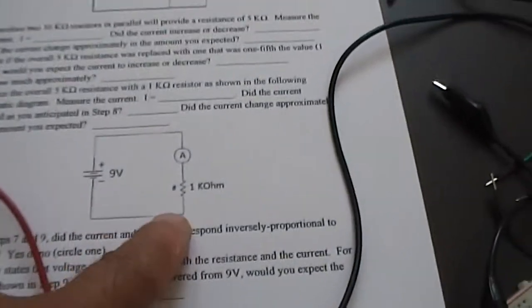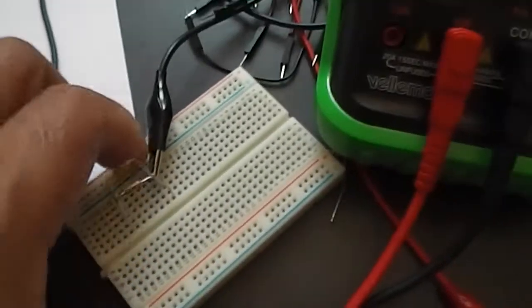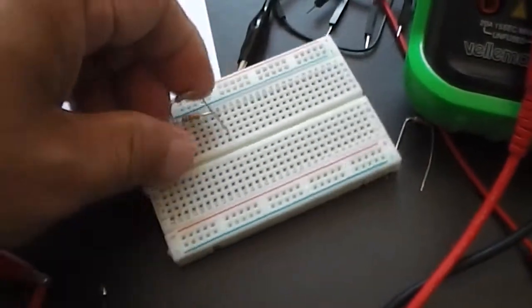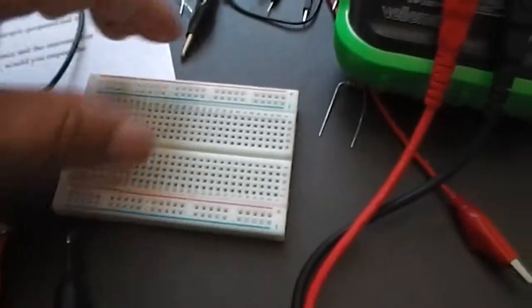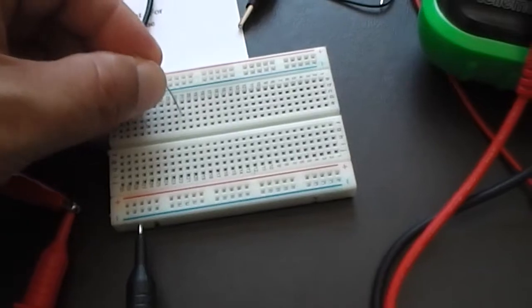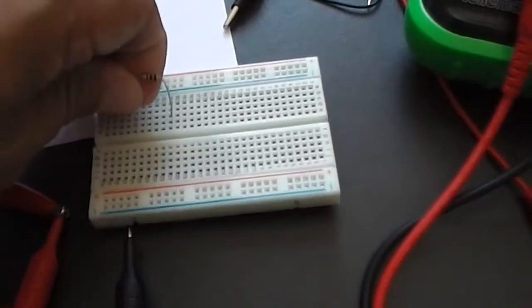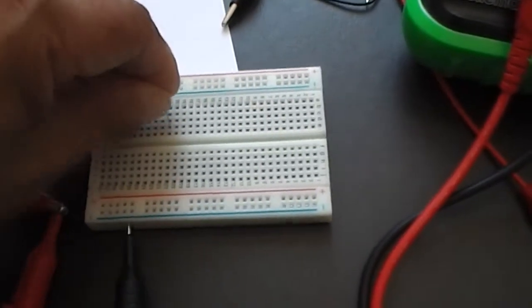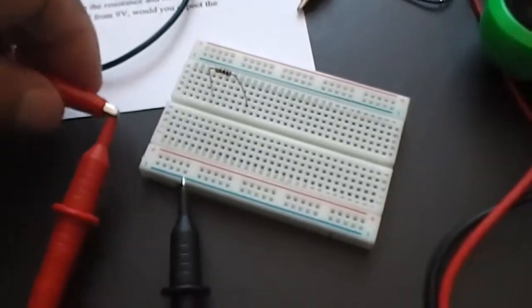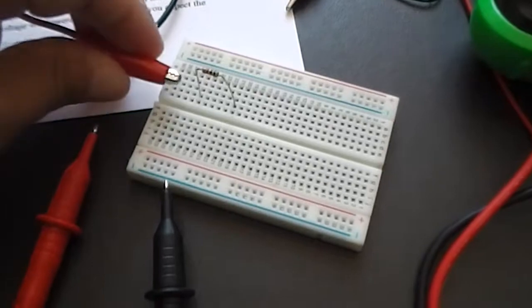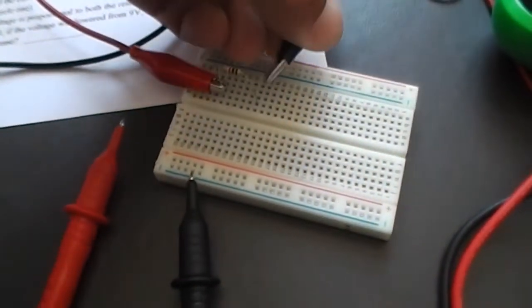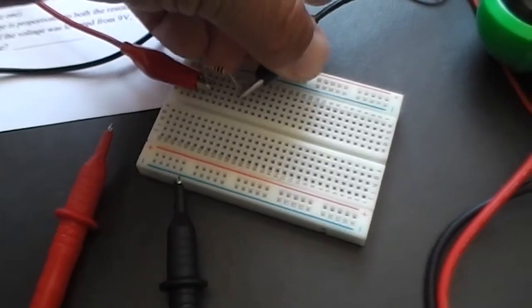So what we need to do is we need to replace the two resistances here. We need to take them out, and we're going to use just a single 1k ohm value, which I have here. So let's go ahead and put that in here, somewhere around there. That's fine. And again, I will connect the positive side of the battery here, and the negative of the battery right there.